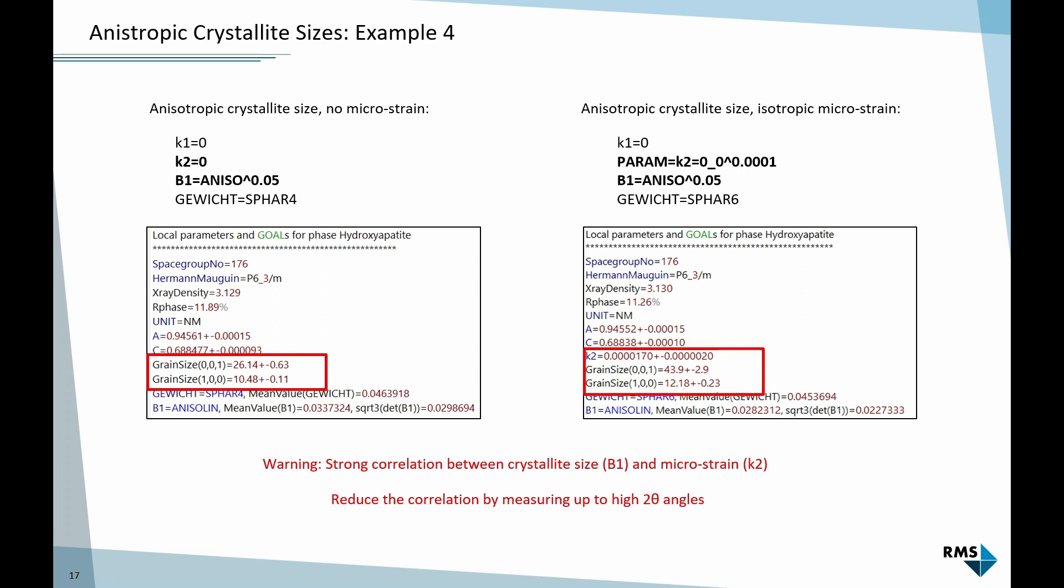Otherwise, if we only measure up to 60 degrees, as in these examples, we will end up with these strong correlations and we will not be able to find a reliable solution for the crystallite size.